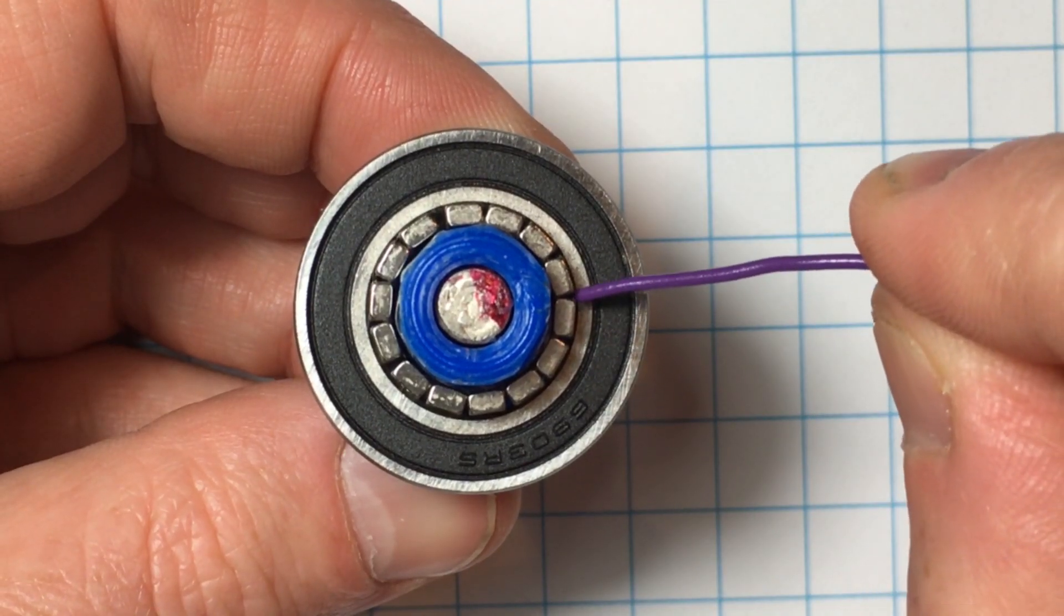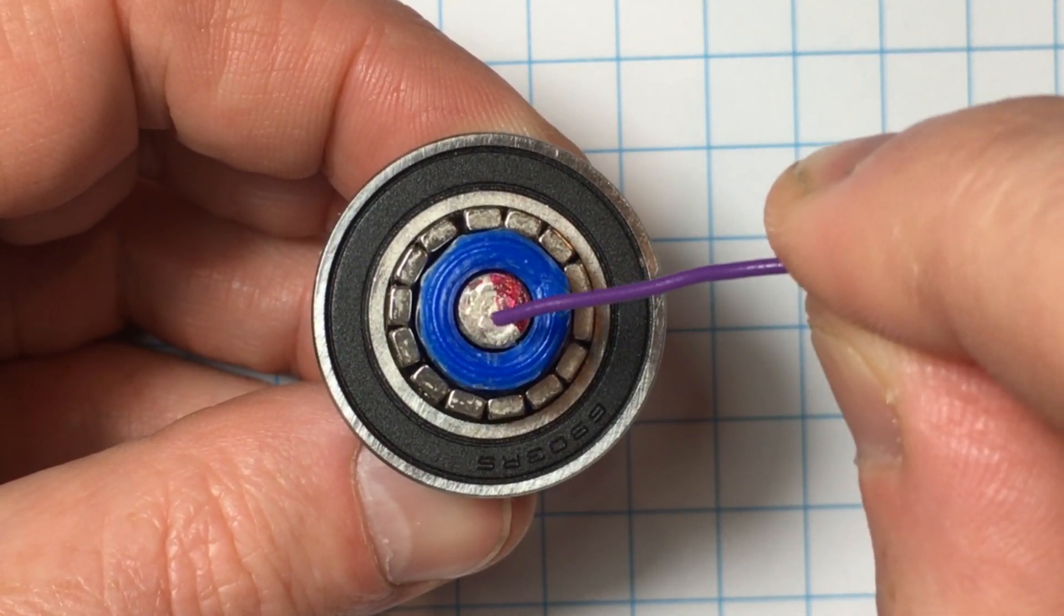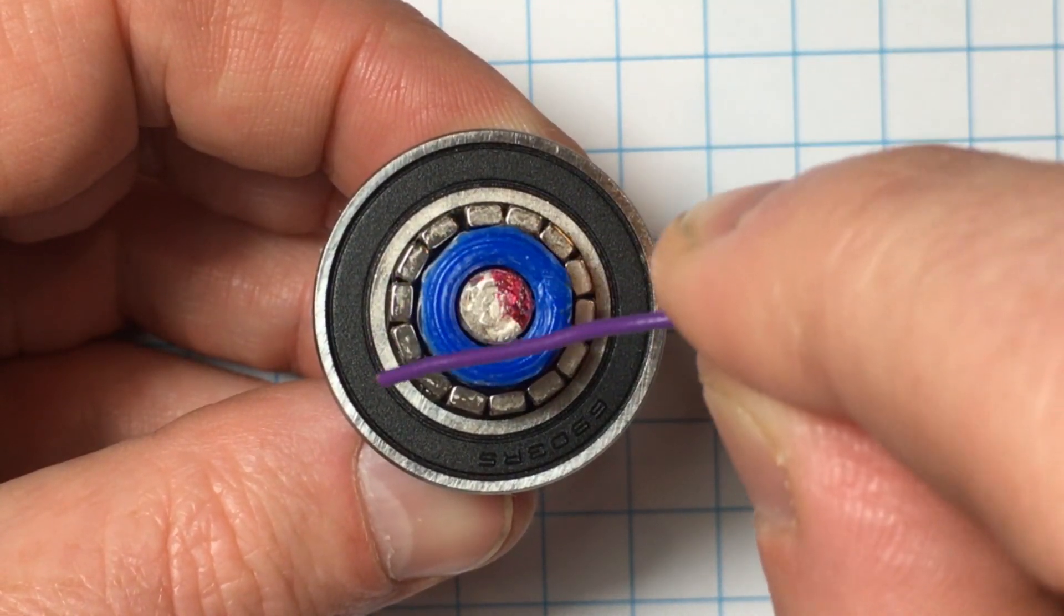The flux path of a typical magnetic gearbox travels from the center to the outside, around the circumference, and back to the middle.